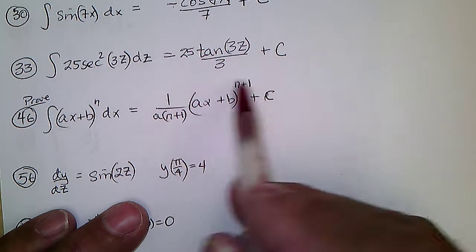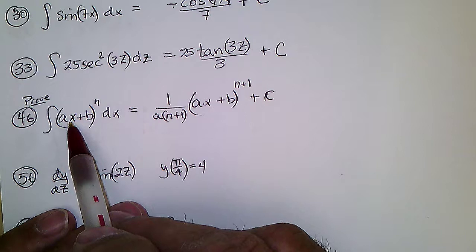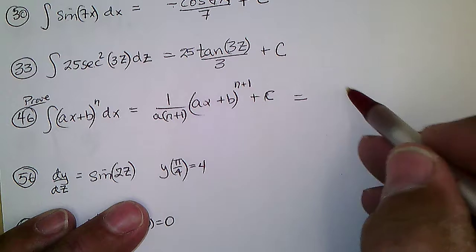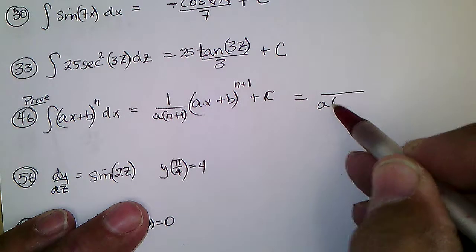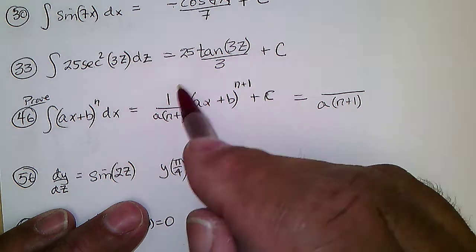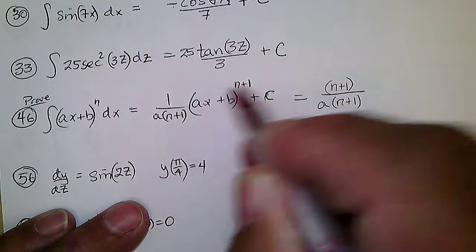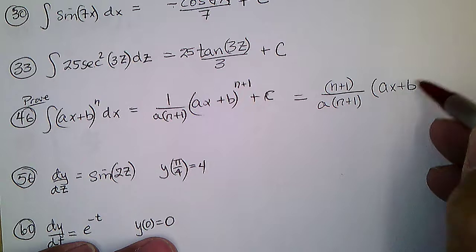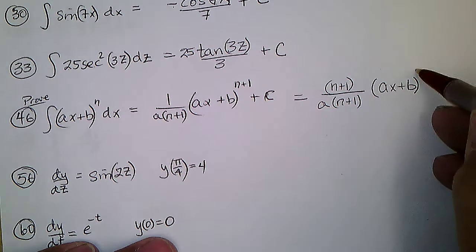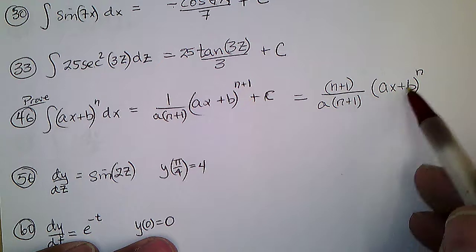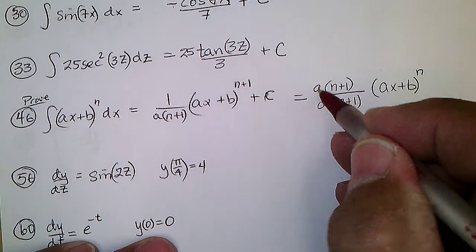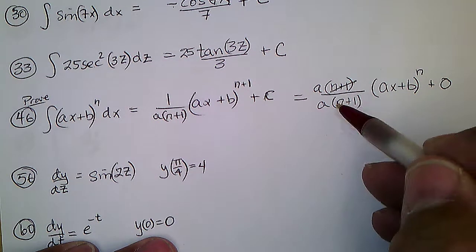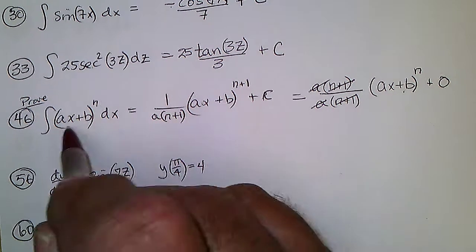This problem asks us to take the derivative of the antiderivative and show it comes out to the original. Taking the power down, we get n+1 down and drop the power by 1, which gives ax plus b to the n. The chain rule says times the derivative of the inside, which is a, plus the derivative of a constant is 0. Things cancel, and we get what we're supposed to.